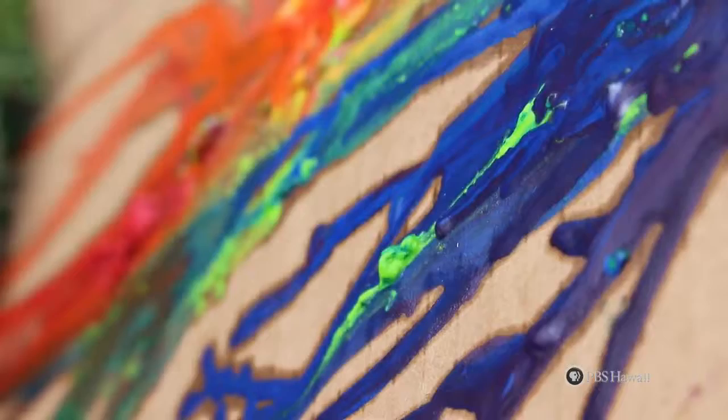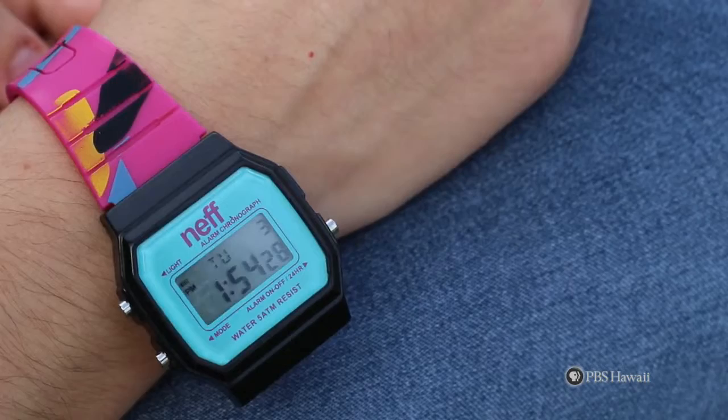Once you are satisfied, turn your hair dryer off and wait for the colorful melted crayon wax to dry. And voila! Look what you and a bunch of unused old crayons can create!